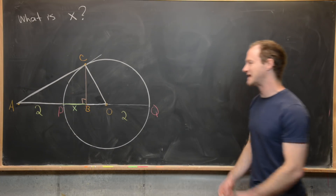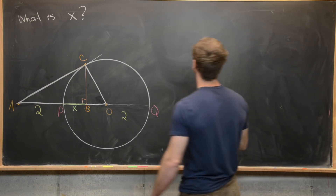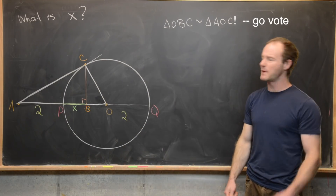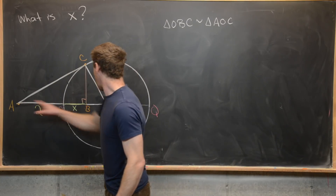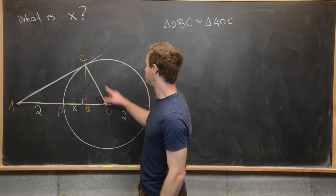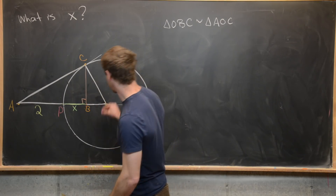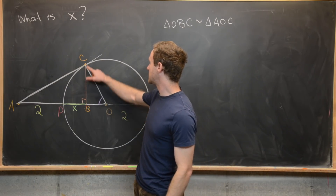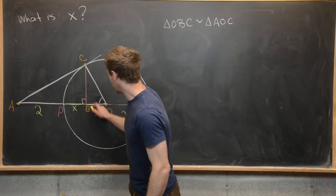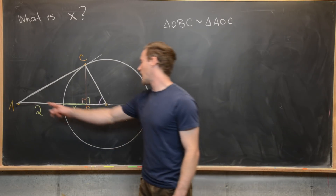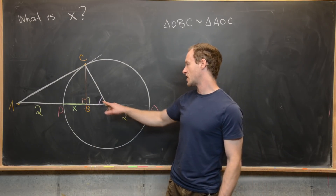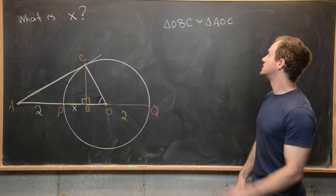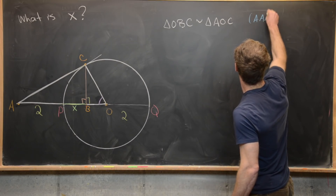The first thing we're going to do — which will take us all the way to the first solution — is notice that triangle OBC is similar to triangle AOC. Triangles AOC and BOC share this angle, drawn in purple. Furthermore, triangle OBC has a right angle at B, and triangle AOC has a right angle at vertex C. They share the purple angle and both have a right angle, which means their third angles are also equal, so by angle-angle-angle they are similar triangles.